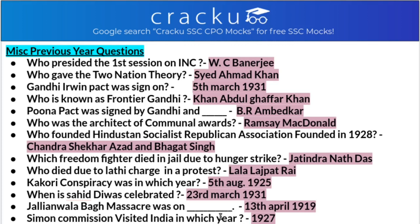Miscellaneous previous year questions: Who presided over the first session of the Indian National Congress? It was presided by WC Banerji, or Umesh Chandra Banerji. Who gave the Two Nation Theory? The Two Nation Theory was given by Syed Ahmed Khan. The Gandhi-Irwin Pact was signed on 5th March 1931. Who is known as the Frontier Gandhi? The one known as the Frontier Gandhi is Khan Abdul Ghaffar Khan. The Pune Pact was signed between Gandhi ji and BR Ambedkar.